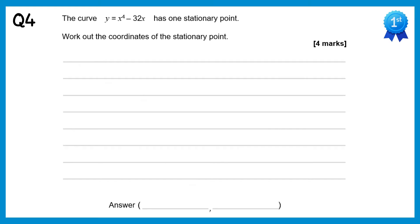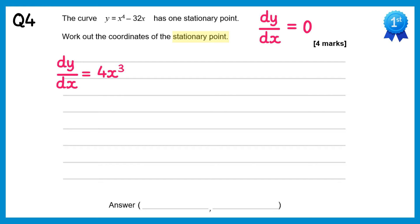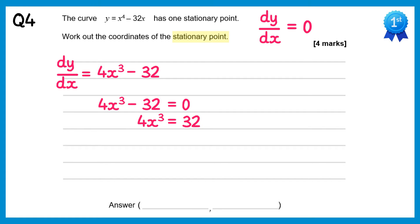In this question we're looking for the coordinates of a stationary point. Remember we have a stationary point when dy/dx equals 0. Differentiating x⁴ gives 4x³ and differentiating negative 32x gives negative 32. Setting this equal to 0: 4x³ minus 32 equals 0. Adding 32 gives 4x³ equals 32, dividing by 4 gives x³ equals 8, and cube rooting both sides gives x equals 2.